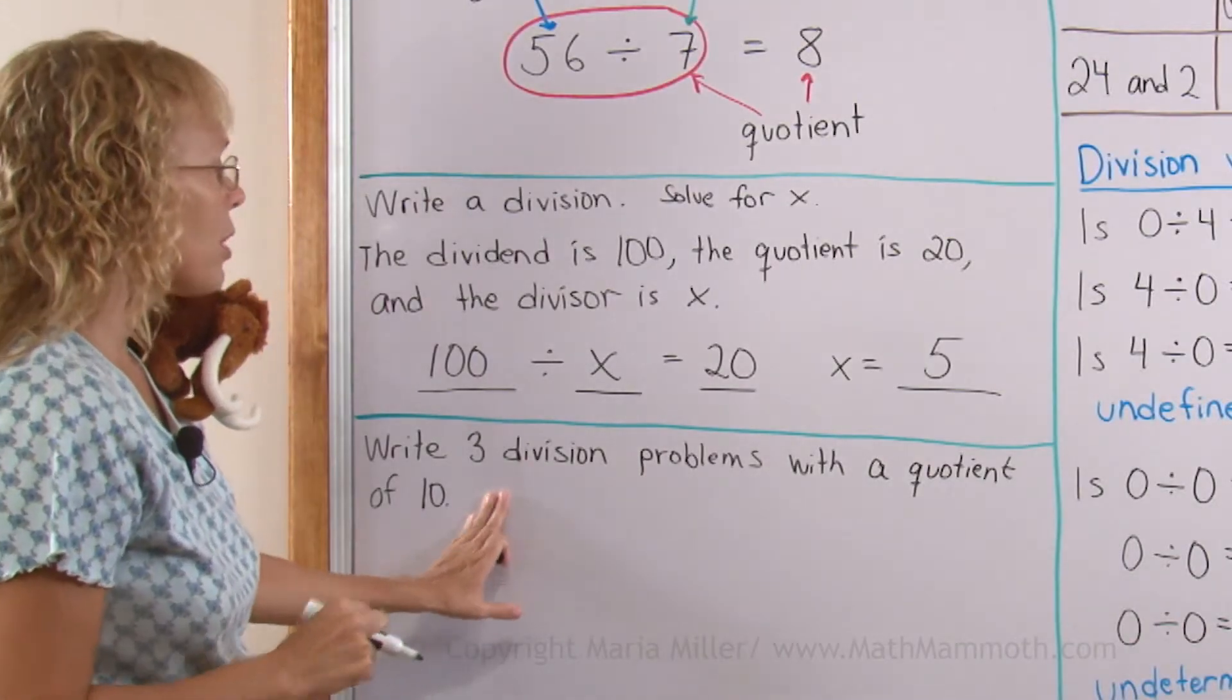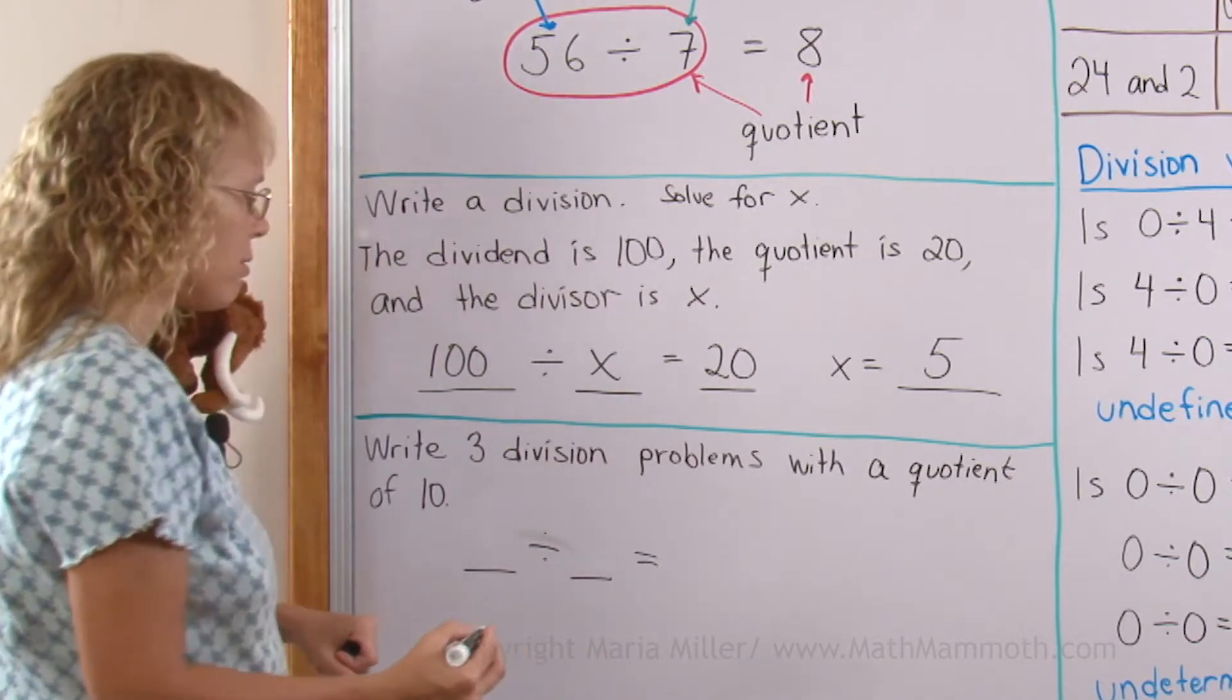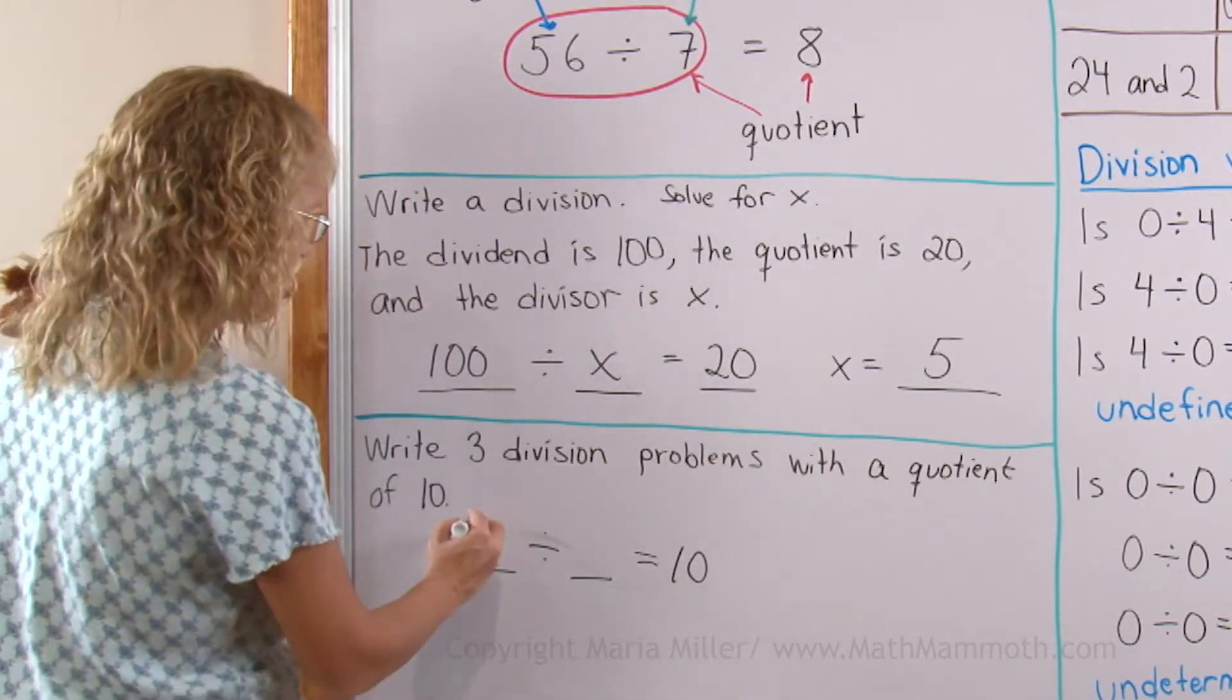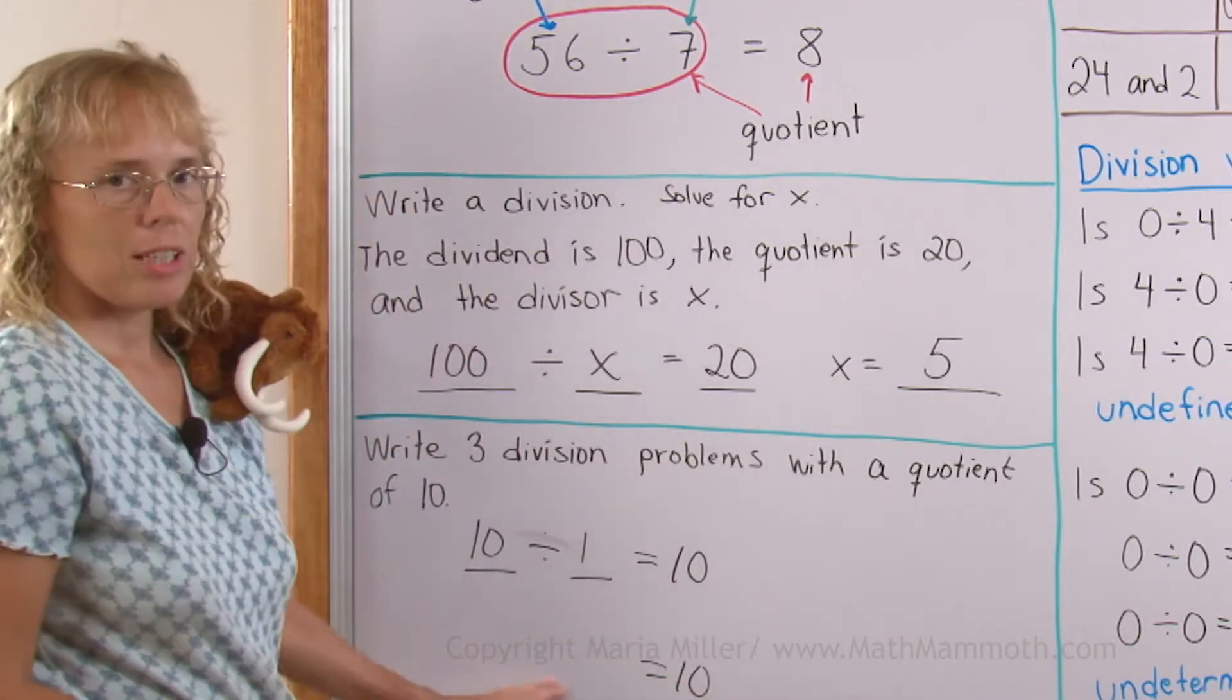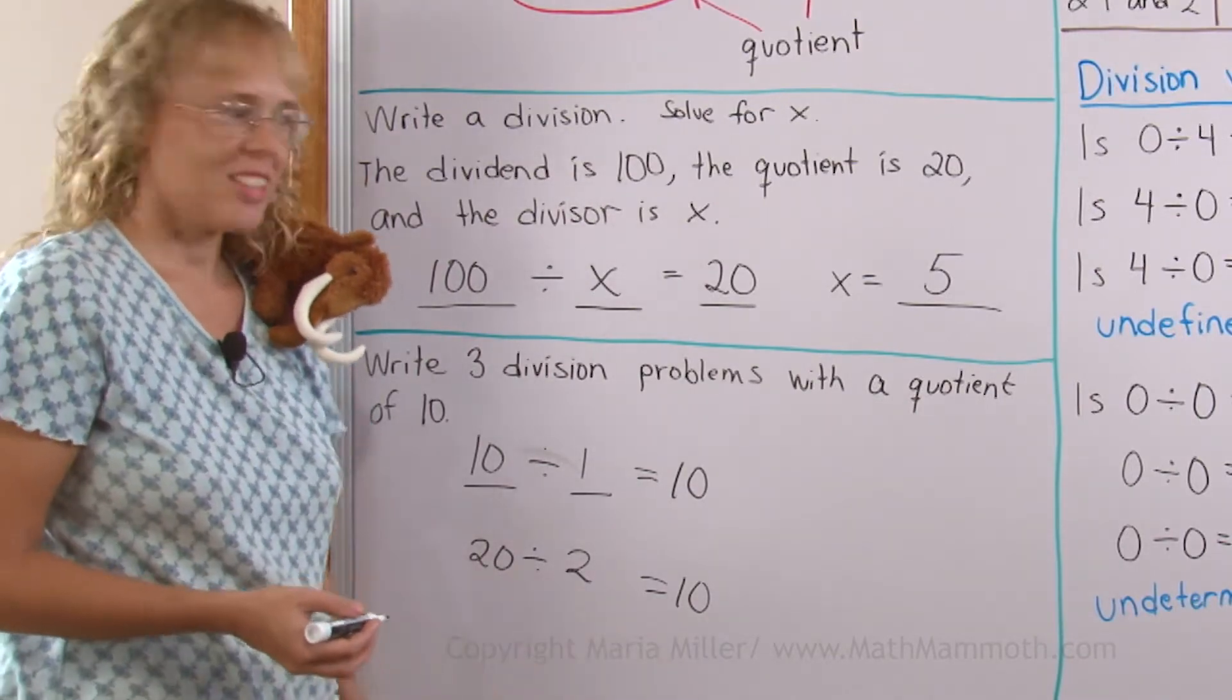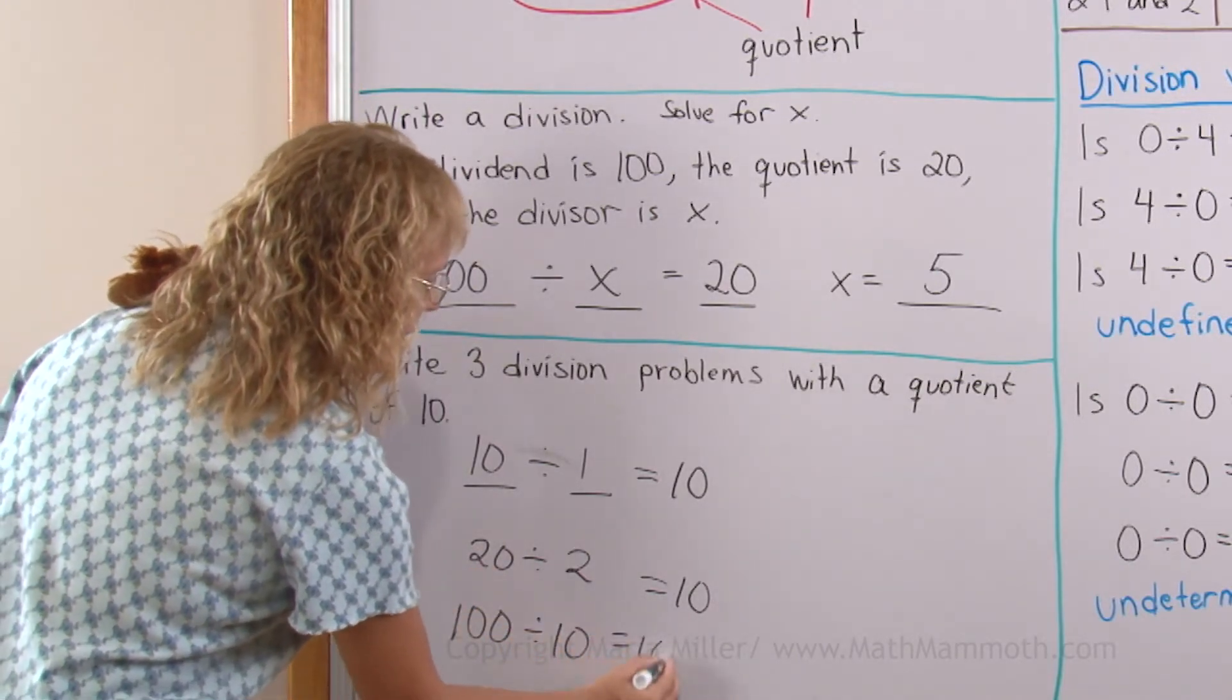Write three division problems with the quotient of 10. So I need to write division problems where the quotient means the answer here is 10. Something divided by something equals 10. Maybe I'll choose 10 divided by 1. Then another one, maybe 20 divided by 2. And if I don't feel very creative, I will go 30 divided by 3 equals 10. But maybe I'll write 100 divided by 10. A little bit different. And that's all done.